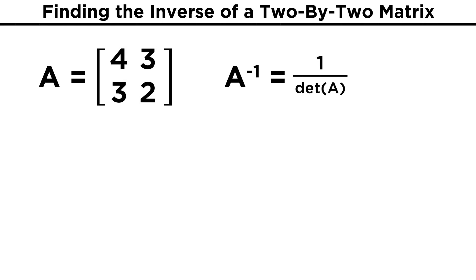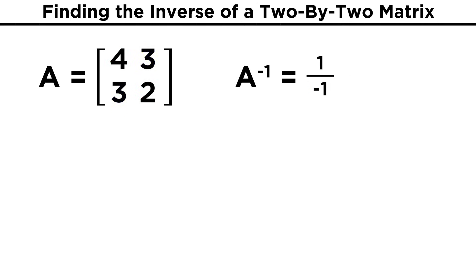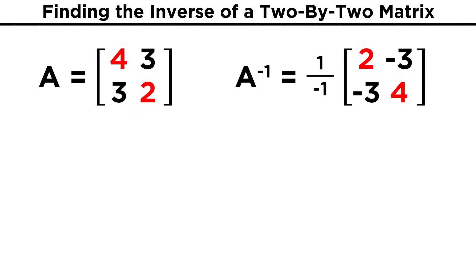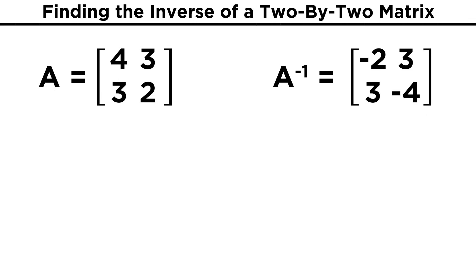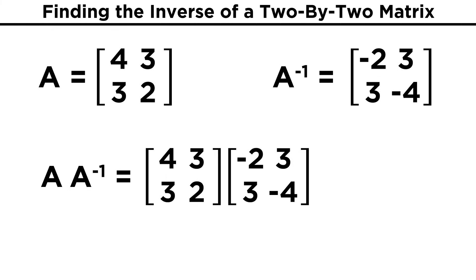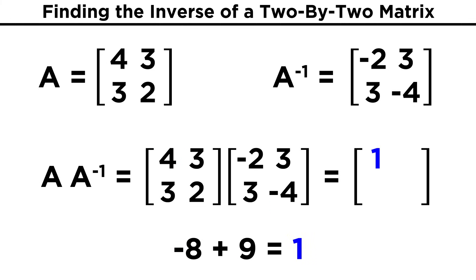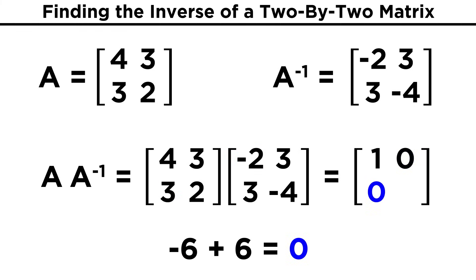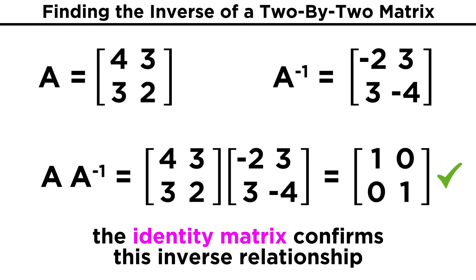To get the inverse, we find one over the determinant, and the determinant is eight minus nine. So here we have one over negative one, and after that comes the two by two matrix with these two entries swapped and the signs of these two inverted. That gives us two, negative three, negative three, four. Incorporating this negative one out here just gives us negative two, three, three, negative four. And that is the inverse of this original matrix. Let's multiply them together and see what we get — we do get the identity matrix, so we know our answer was correct.